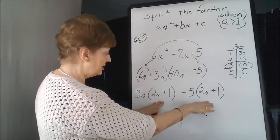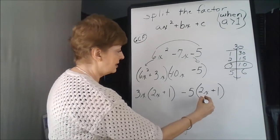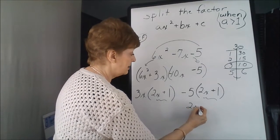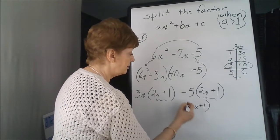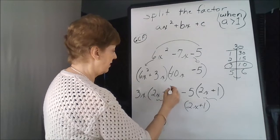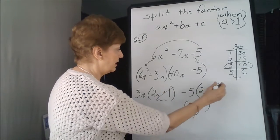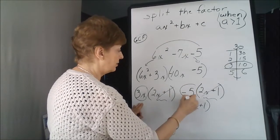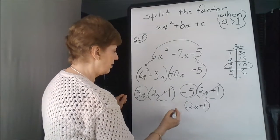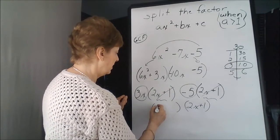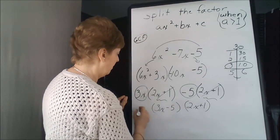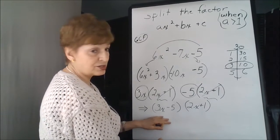So now these two that are in the parentheses match. That's what I wanted. So 2x plus 1 comes out. I've now finished this one and this one. And the factors that I pulled out couple together and make the other parentheses. So this is 3x minus 5. Those are the factors. That's the answer.